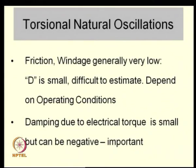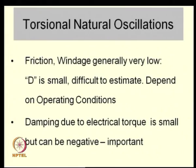Torsional natural oscillations — the natural oscillations of the shaft, turbine, and generator system — are effectively like a spring-mass oscillation, but importantly the friction and windage is very low. The damping associated with these torsional oscillations is actually quite small. Electrical torque also affects the torsional oscillations; one can look at it as an input. The damping due to electrical torque can be even negative, which means that the oscillations can grow.